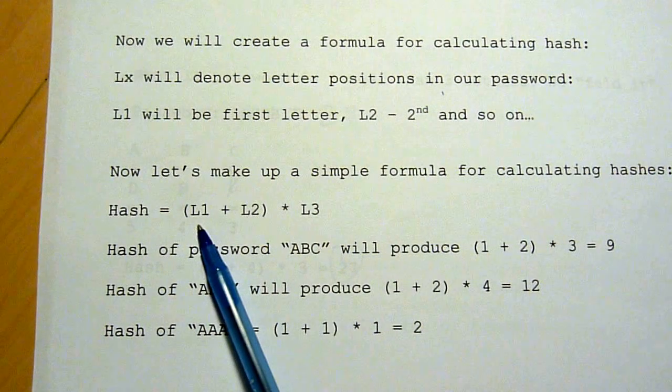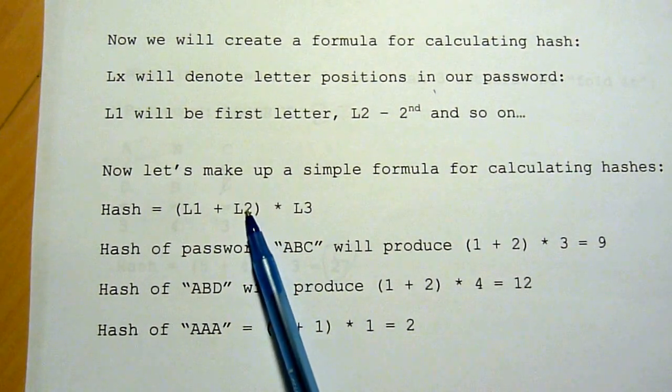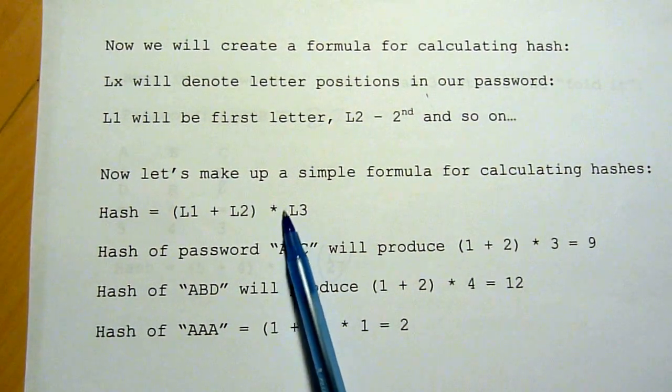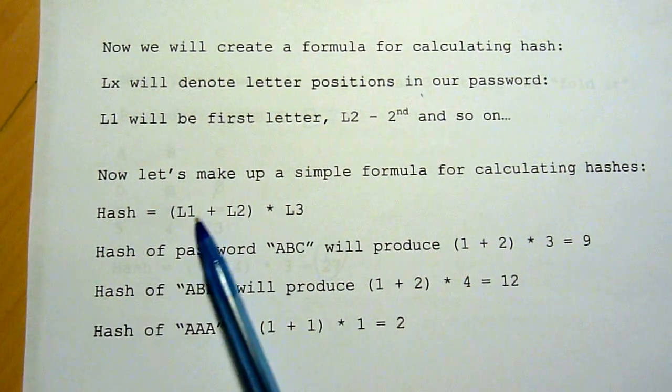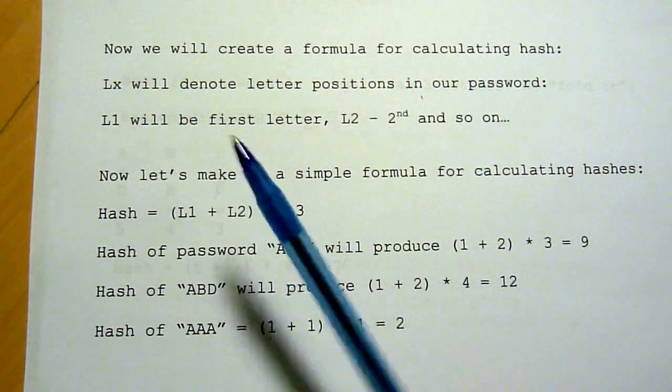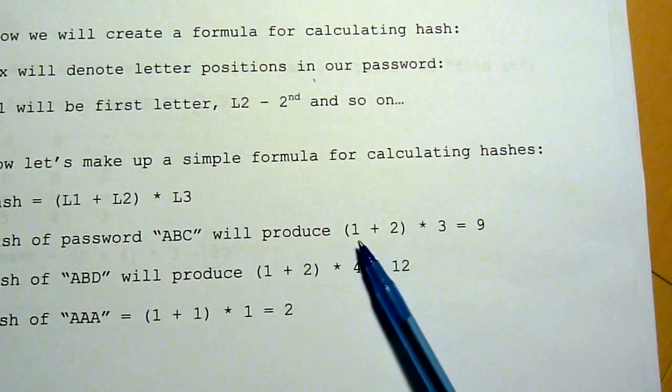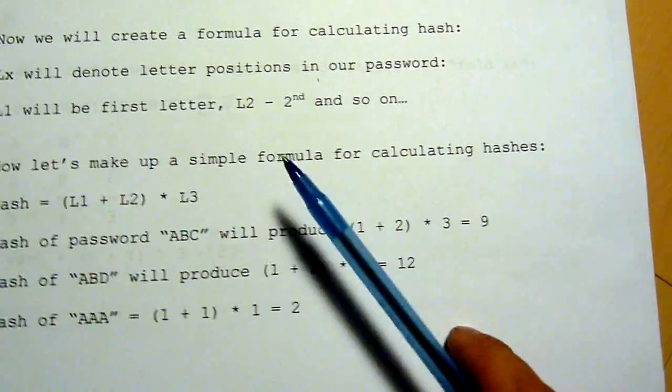So the first letter of the password plus the second letter of the password multiplied by the third letter of the password. So if we have password ABC, this will produce 1 plus 2 equals 3, multiply 3 equals 9. So using our hash of ABC, we get 9.